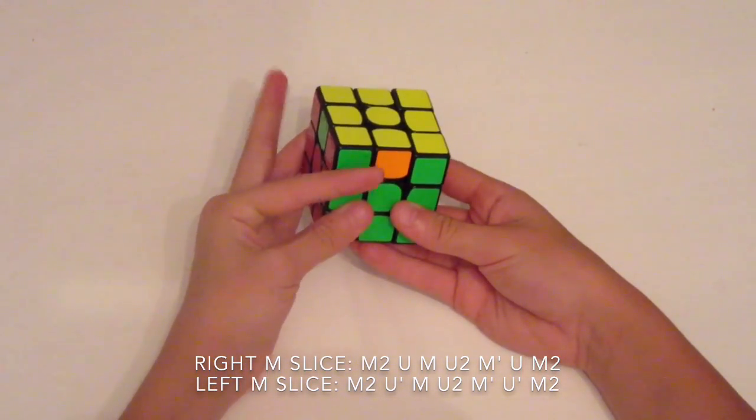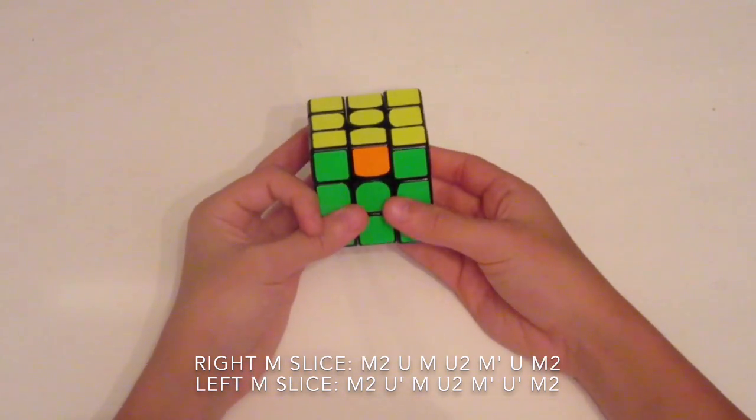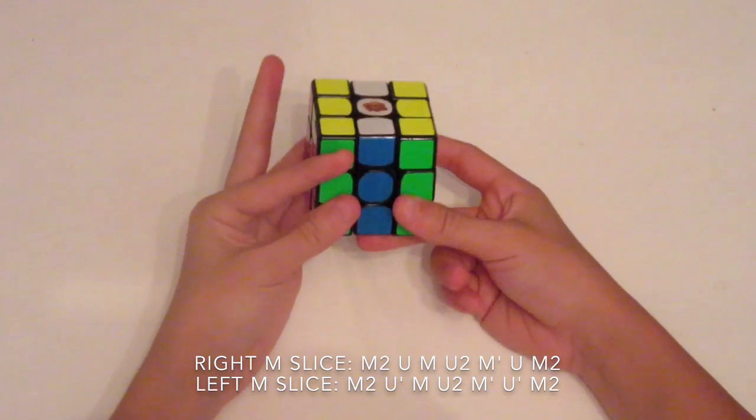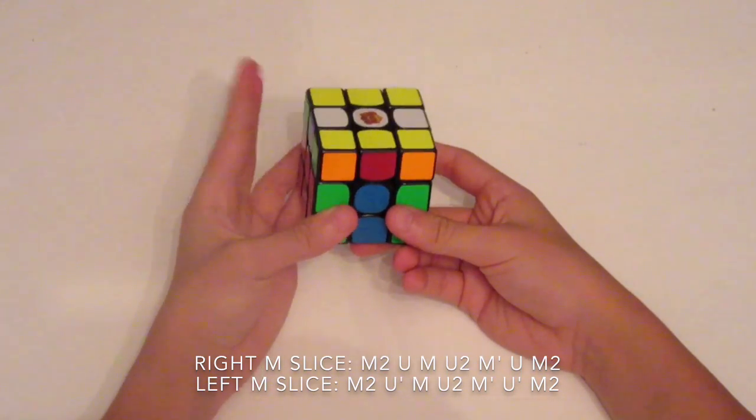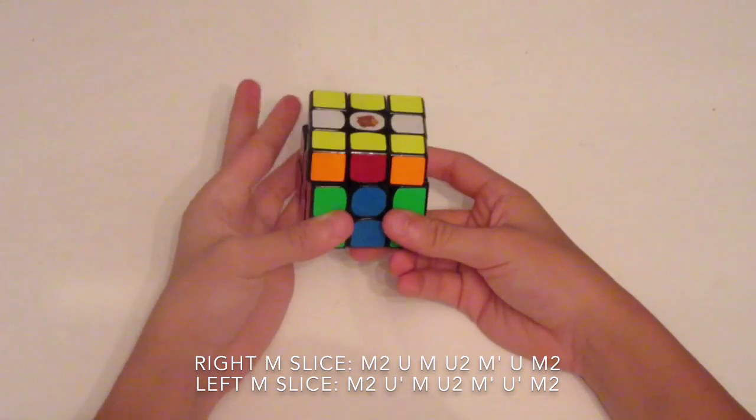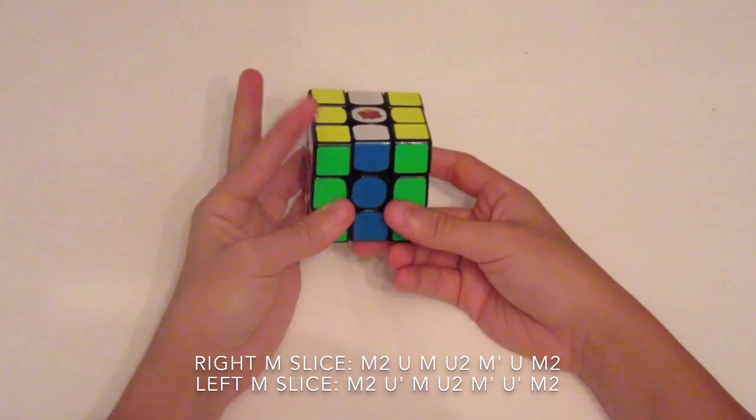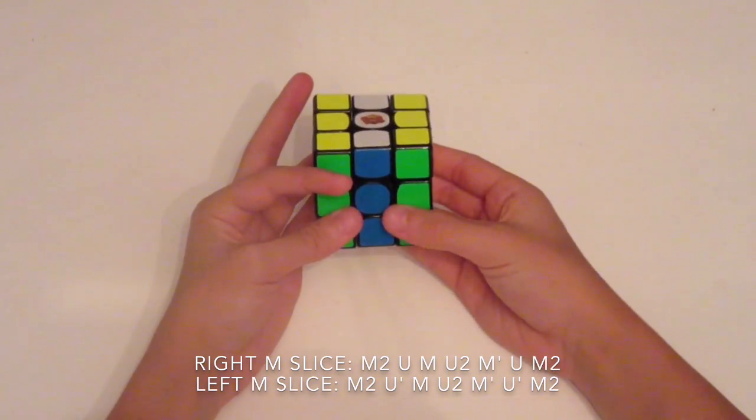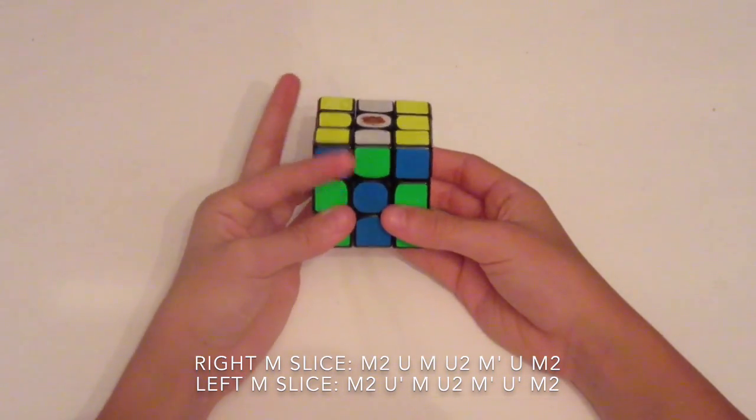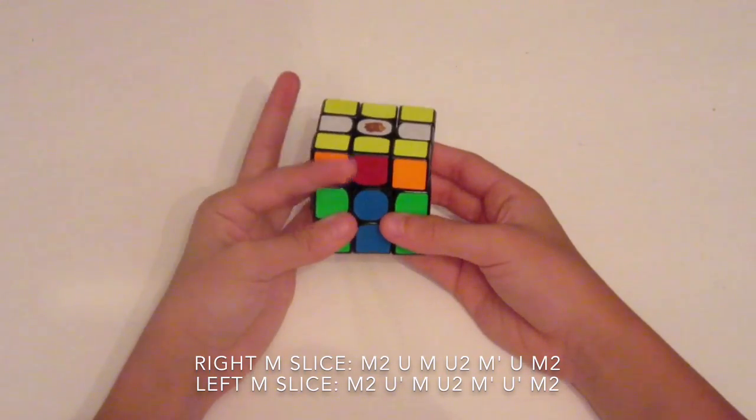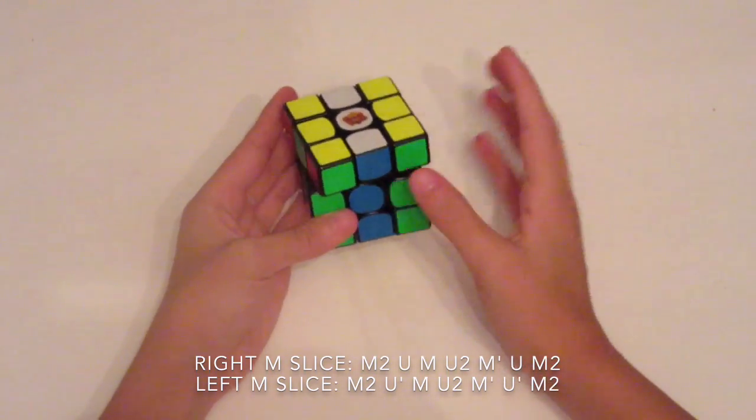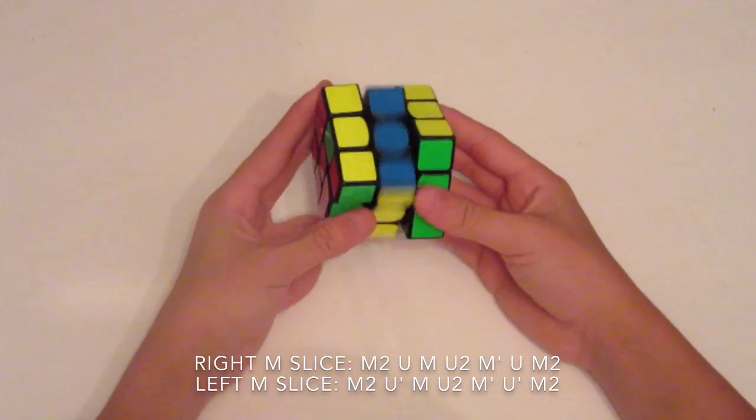Just try to just hold it like this and just push the top layer with your opposite pointer finger. So again, if you're doing M-slices with your left hand, you would push it like this. This is also a good move if you're doing one-handed solves, because that's the only way you'll be able to do U's or U-primes if you do one-handed solves with your right hand.